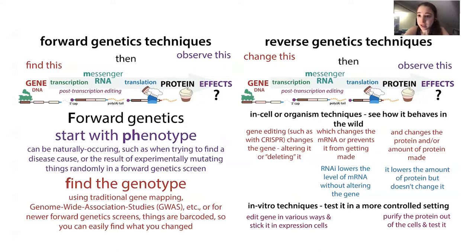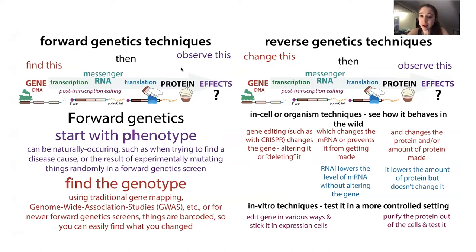If you can remember that forward genetics is the more classical approach — they weren't going around doing CRISPR and making specific genetic changes in those flies; they were just using random mutants and that sort of thing. The forward genetics approach is more classical because you're starting with what you see — you don't have to have knowledge of what precisely causes that in order to see the thing.